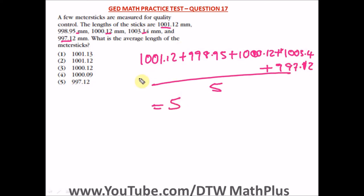And this will give us what? If you add up all this, punch in your calculator, you're going to get 5000.45 then divide by 5.